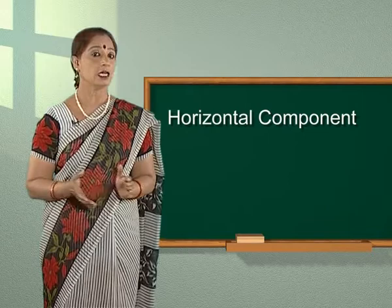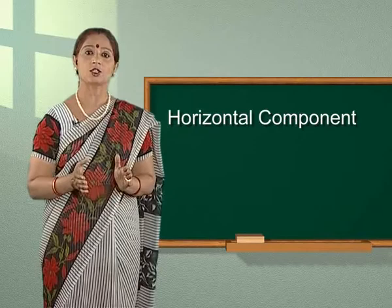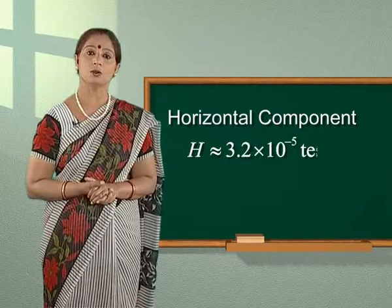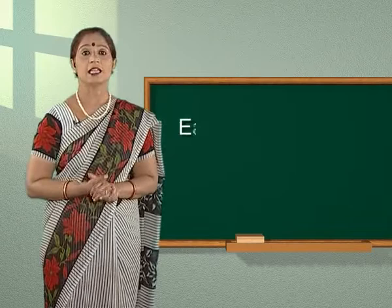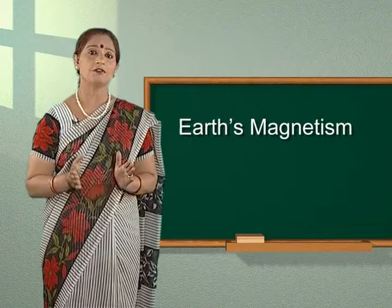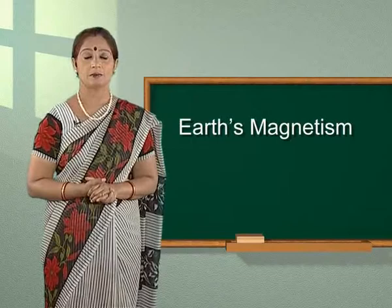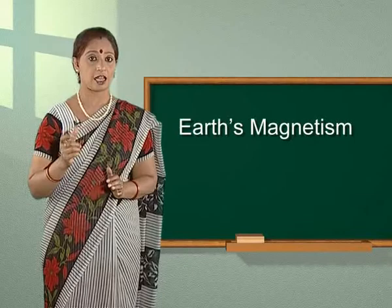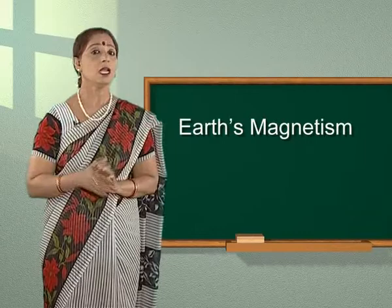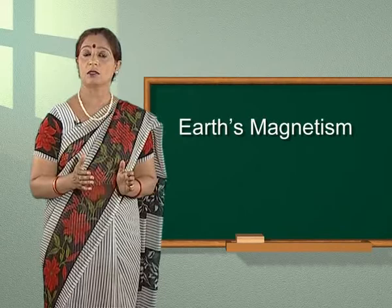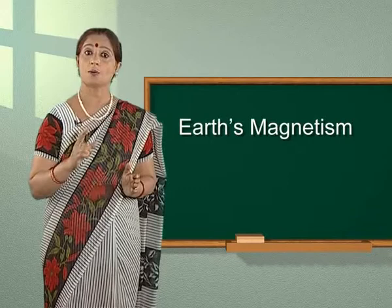The value of H at a place on the surface of Earth is of the order of 3.2 × 10⁻⁵ Tesla. The declination, dip, and horizontal component of Earth's field vary irregularly from place to place and also with time. For example, the north and south poles are shifting their positions. It is believed that once in a long while, deep inside the Earth's core, electric currents slow down, come to a stop, and then pick up in the opposite direction.